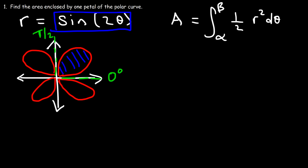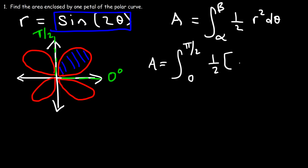So therefore, the area is going to be the integral from 0 to pi over 2, one-half times r squared, or sine squared 2 theta.